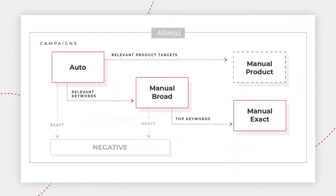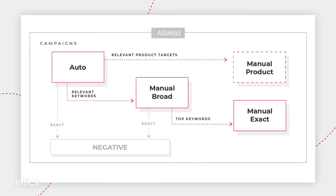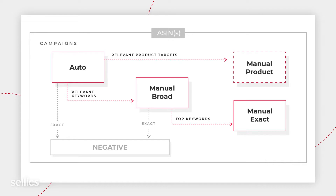The second part of Selix Automation is keyword automation rules. These rules serve to set up automatic keyword harvesting. But what is keyword harvesting? In this video, we will look at the keyword harvesting process, how it works, and why it is crucial to be competitive on Amazon.